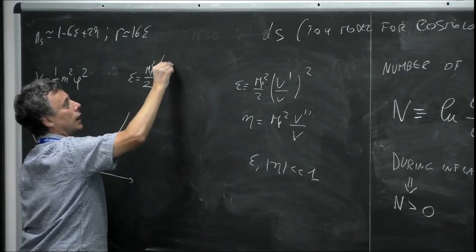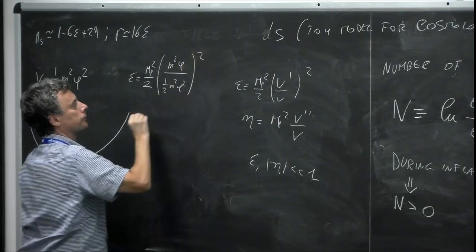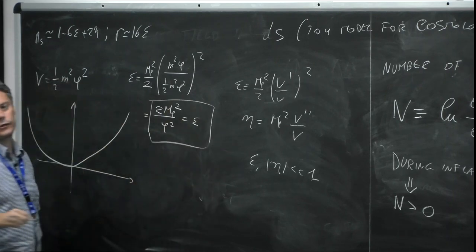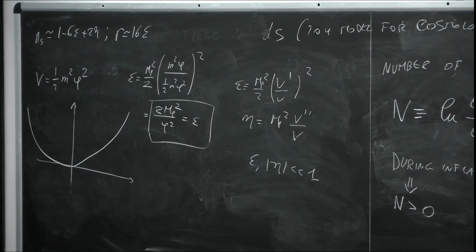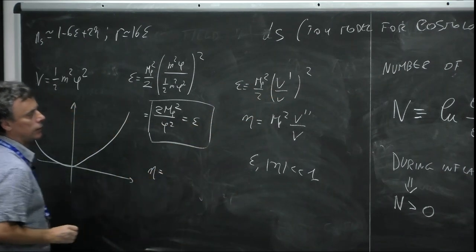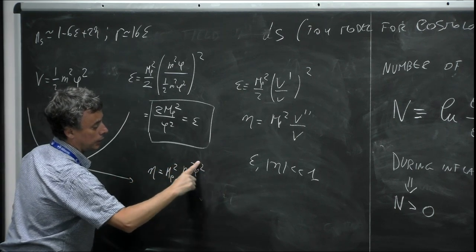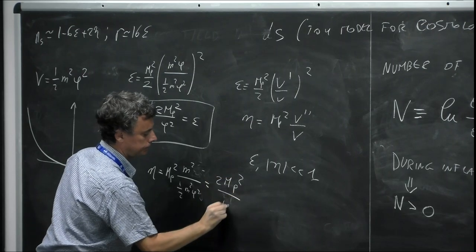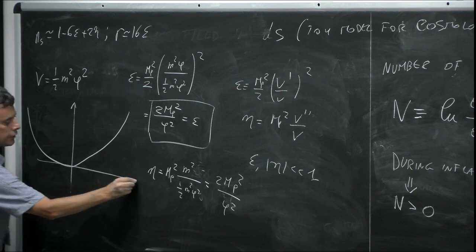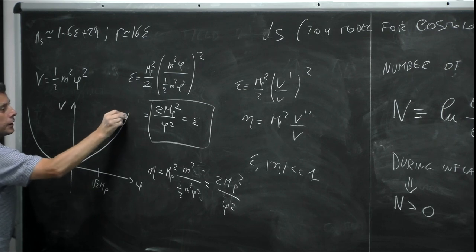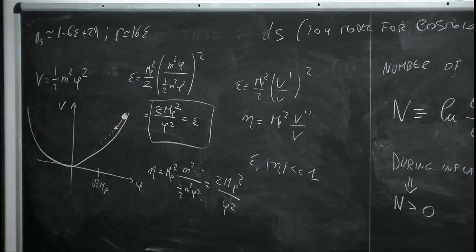First draw the potential to get a feel. Naively it seems not flat, but remember these are the flatness parameters. For ε = M_Pl²/2 · (V'/V)² = M_Pl²/2 · (m²φ / V)², you get ε = 2M_Pl²/φ². So the larger φ is, the more flat the potential is. For η, taking the second derivative of V = (1/2)m²φ² also gives 2M_Pl²/φ², approximately the same result.